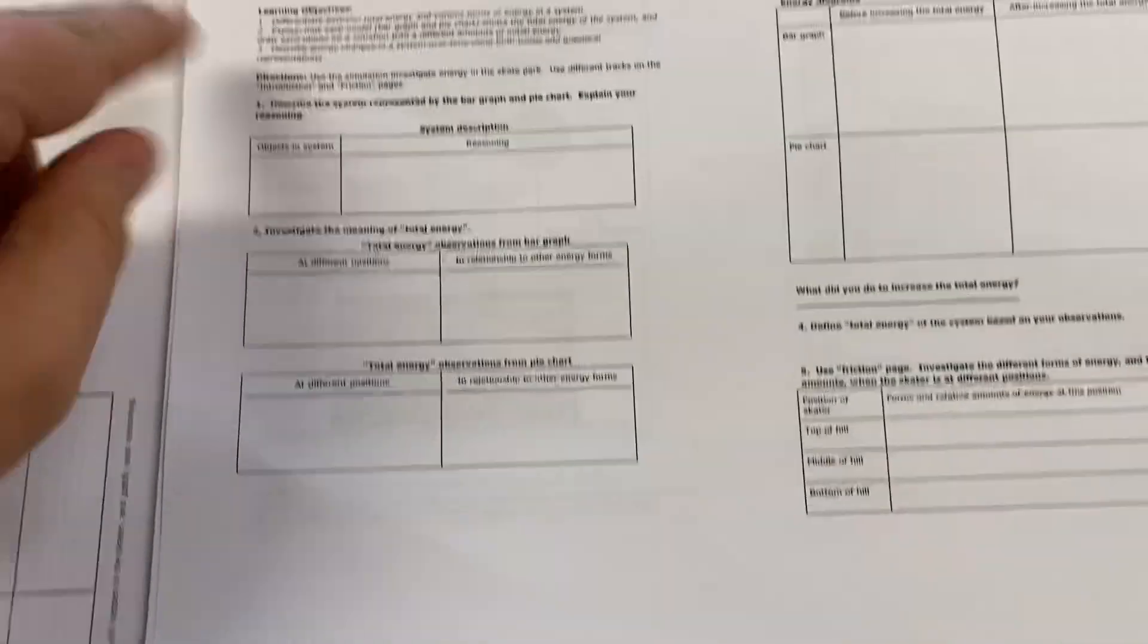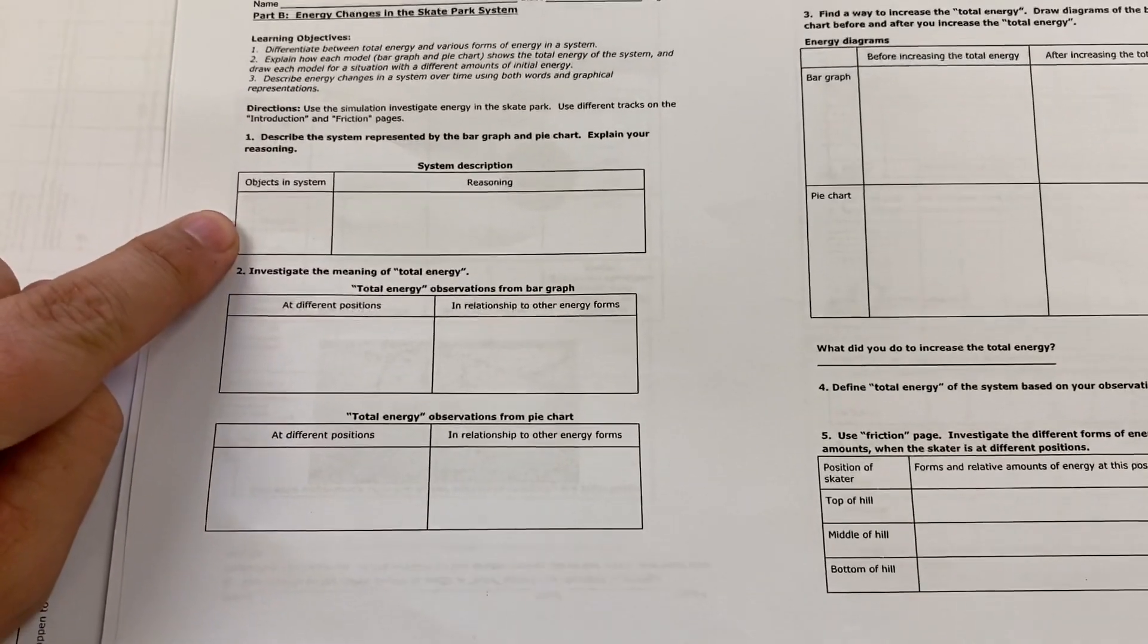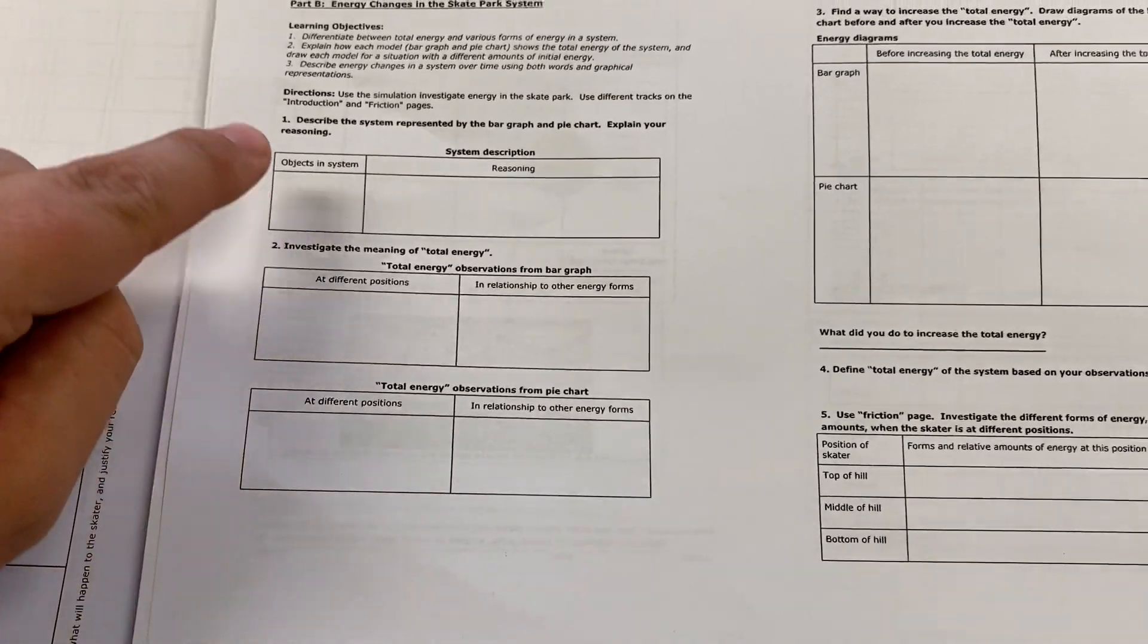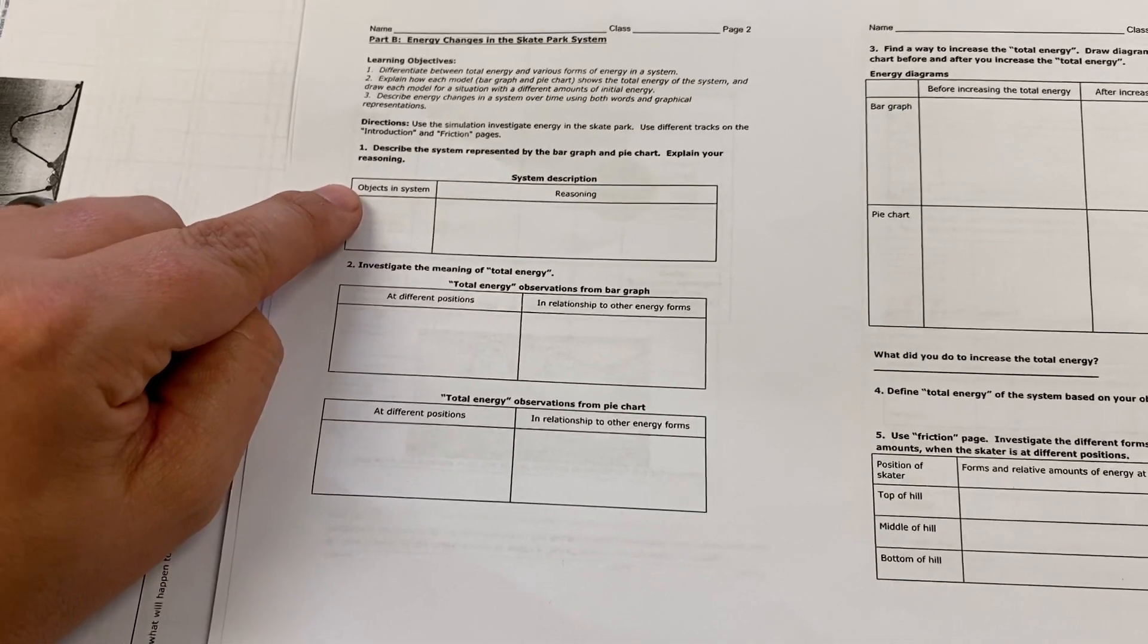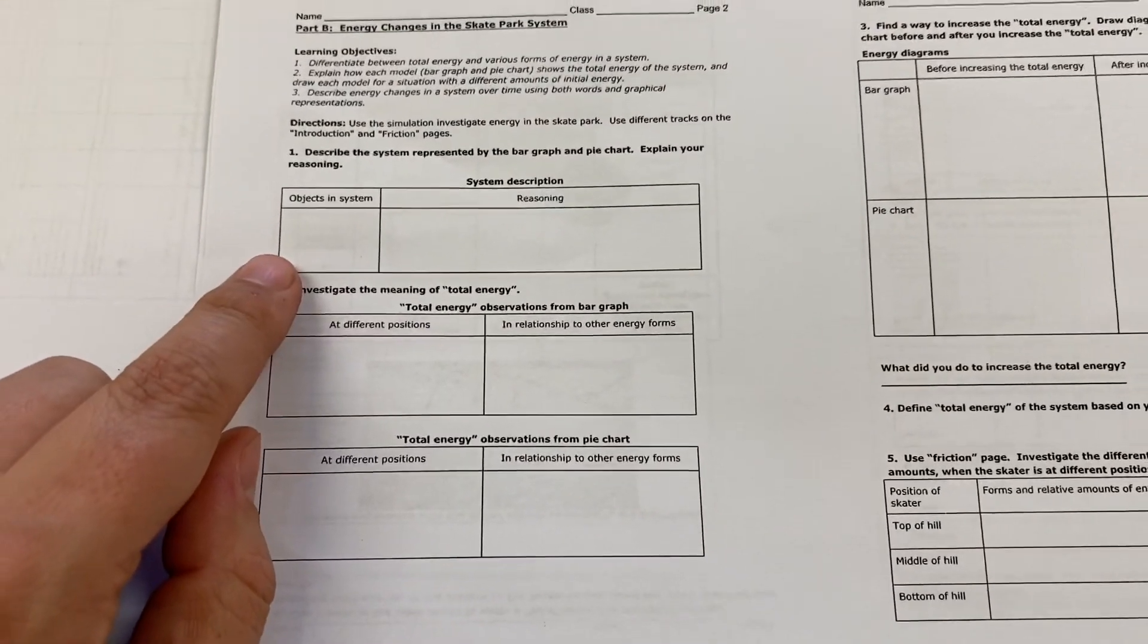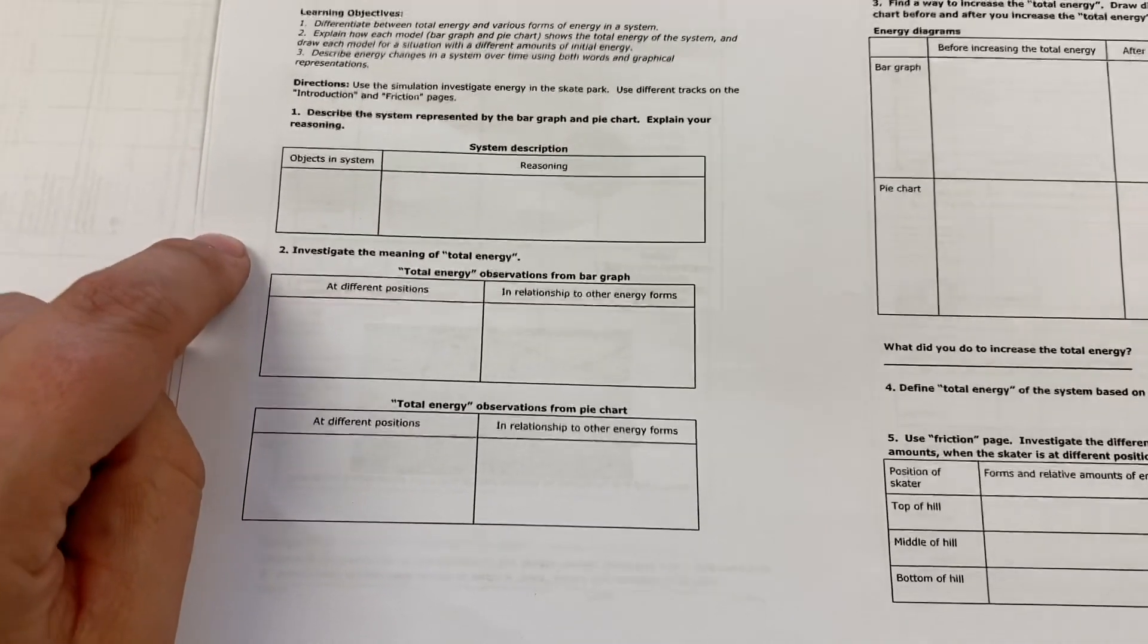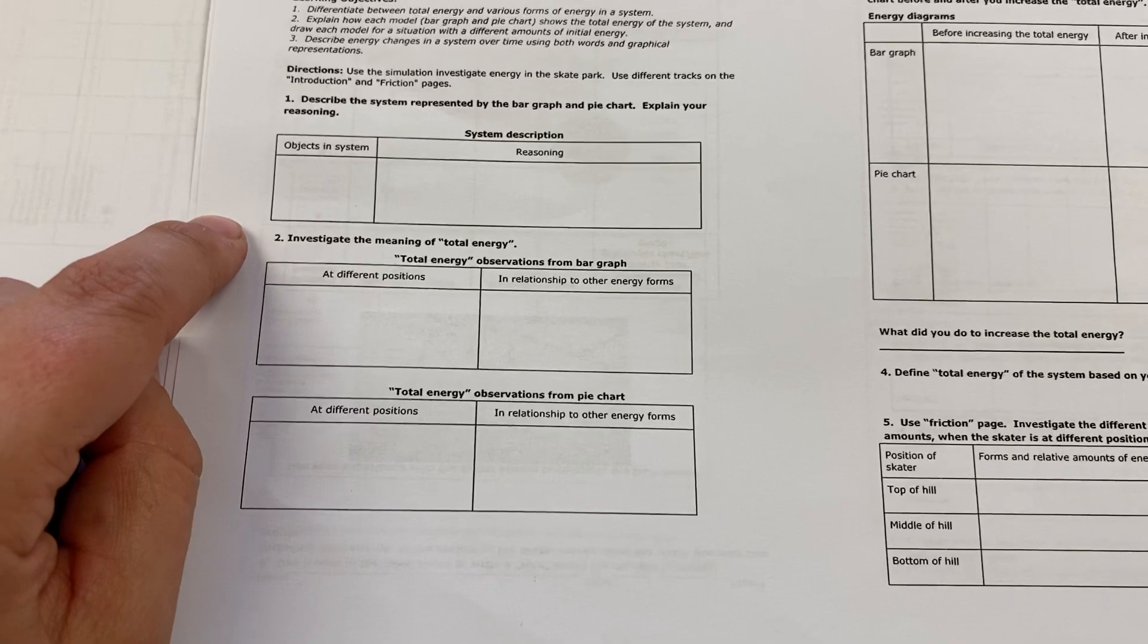Okay, super quick overview of our energy changes in the skate park system. So here are the objects. The objects are the only things that cause the skateboarder to move. So in the system, what causes the skateboarder to actually go down the hill? Think about that. It's big, it's round, we live on it. So that's one of the objects. And the other thing is the thing that actually moves, and that's the skateboarder itself.